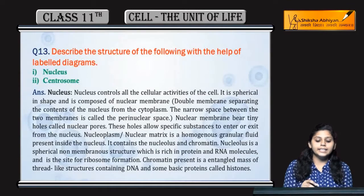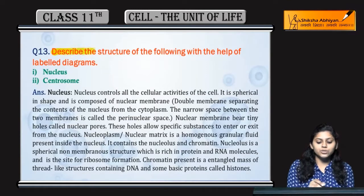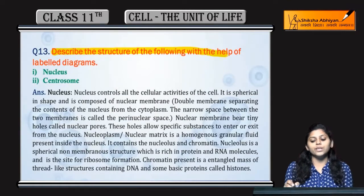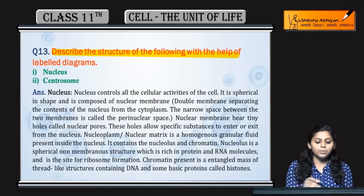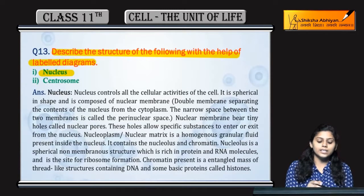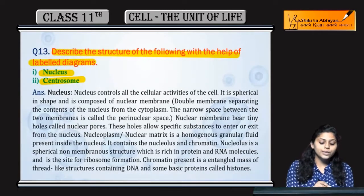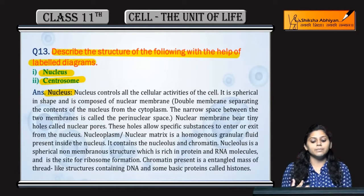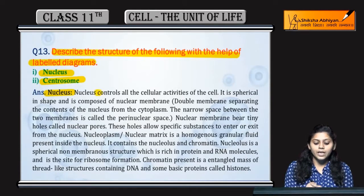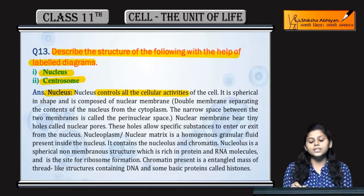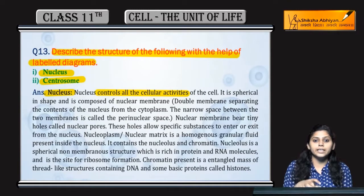Question No.13: Describe the structure of the following with the help of a labelled diagram. First is nucleus and second is centrosome. Nucleus kya hai? Usse brain of the cell bhi bolte hai. It controls all the cellular activities going inside the cell.